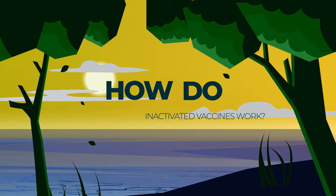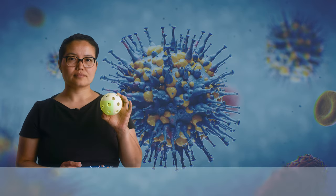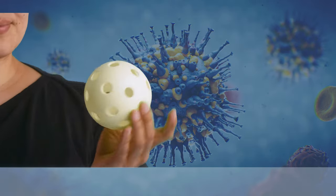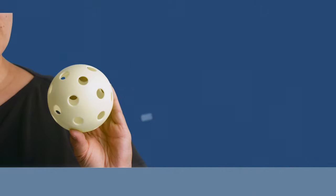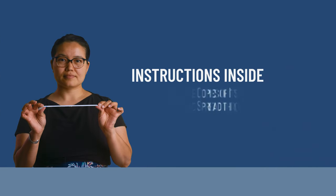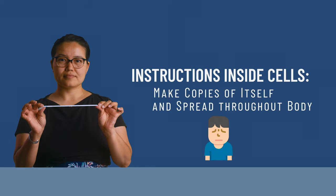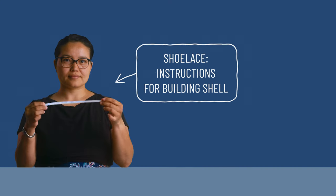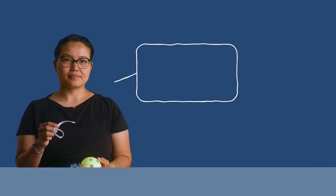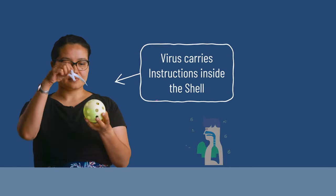Now, how do inactivated vaccines work? Viruses are tiny, so let's build a model — a bigger version of what the virus looks like — to understand how we get sick. The body of a virus is like a shell. Let's pretend that this plastic ball is a shell of a virus. The important part of the virus is the instructions, which tell how to make more copies of itself once it's inside your cells, then it can spread throughout your body to make you sick. In our pretend virus, the shoelace is the instructions for building the virus. The virus carries the instructions inside the shell, so let's tuck the shoelace in.